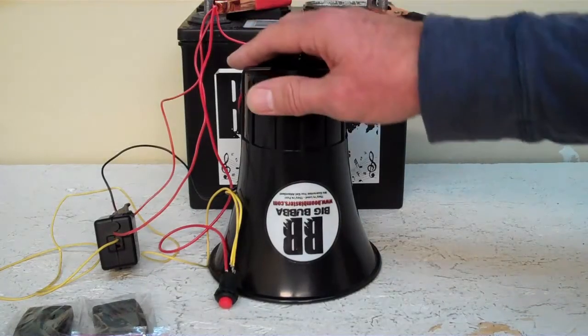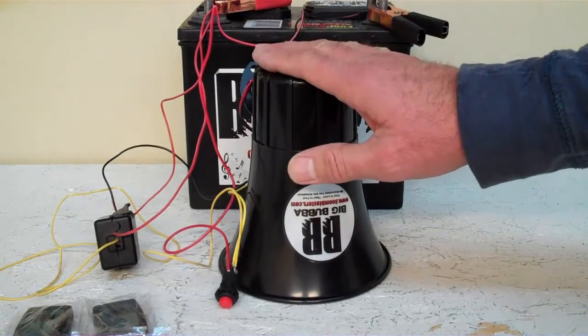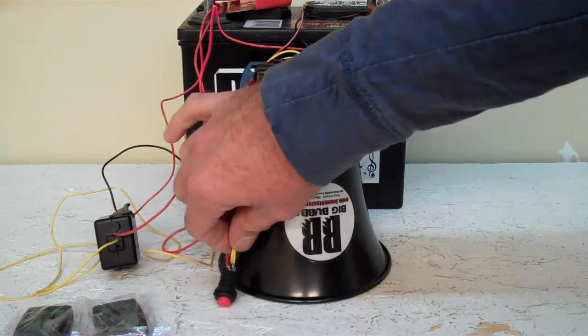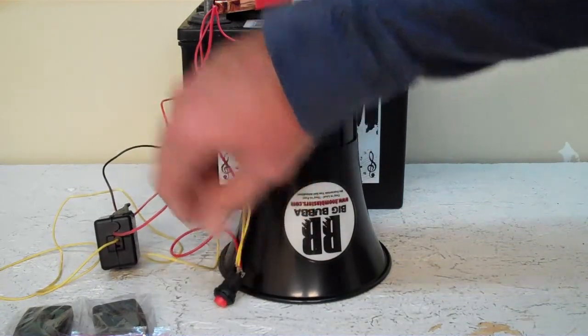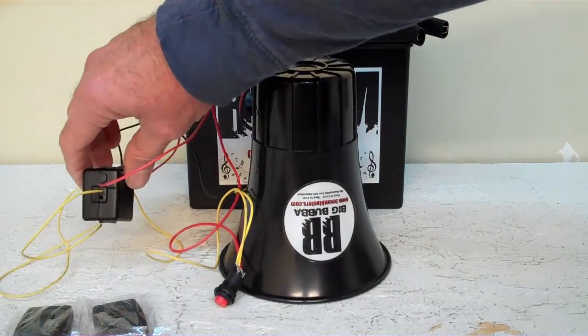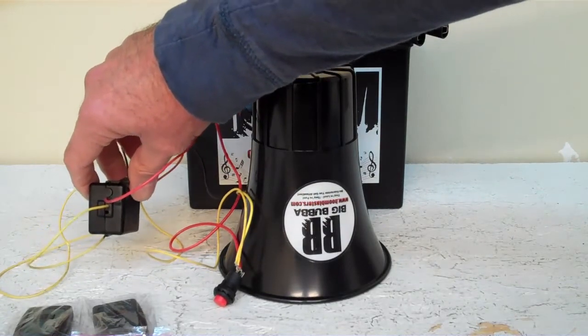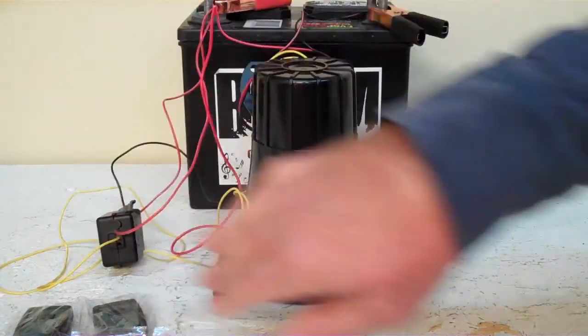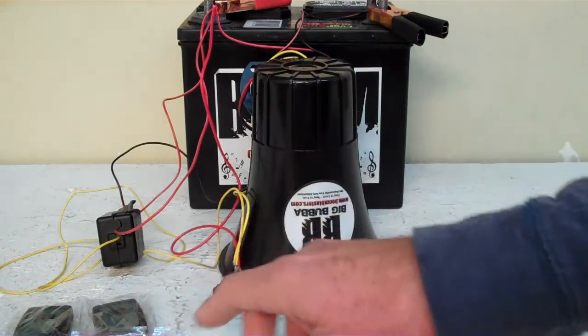Hey everyone, in this video I will show you how to take your Big Bubba horn and hook it up with the button that comes with it, and also how to hook it up with the wireless universal remote kit you can buy extra, so you can actually upgrade and buy the remote kit to go with it.